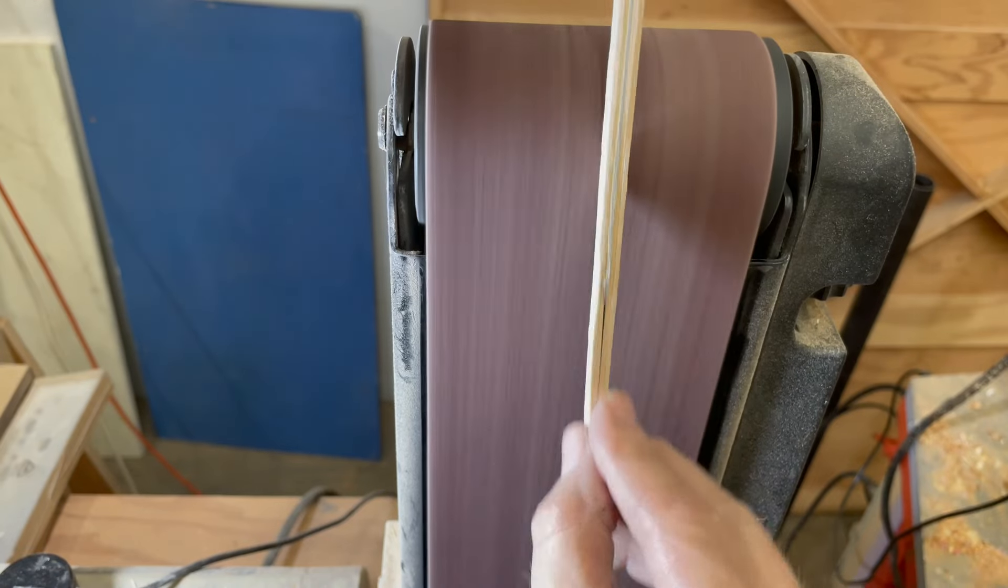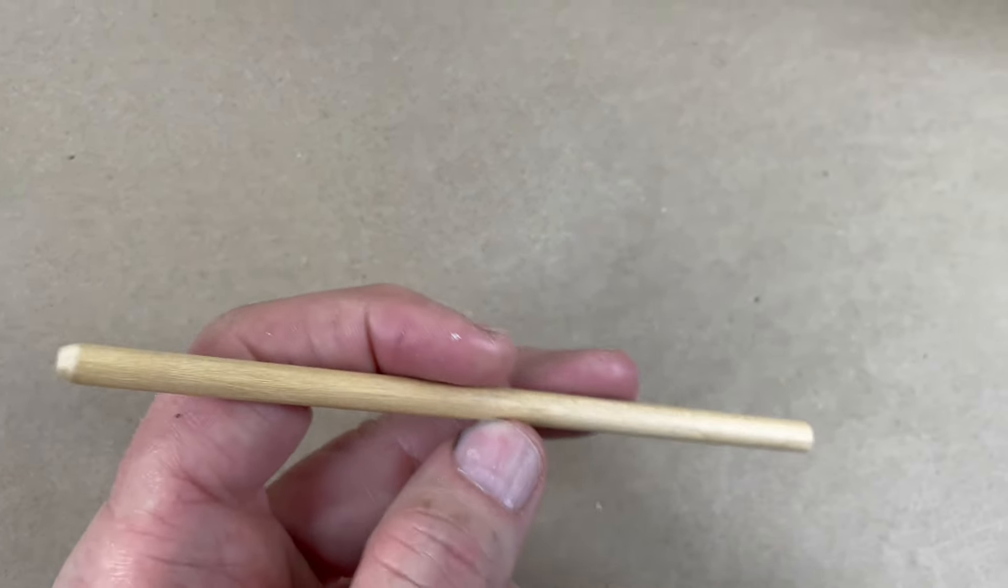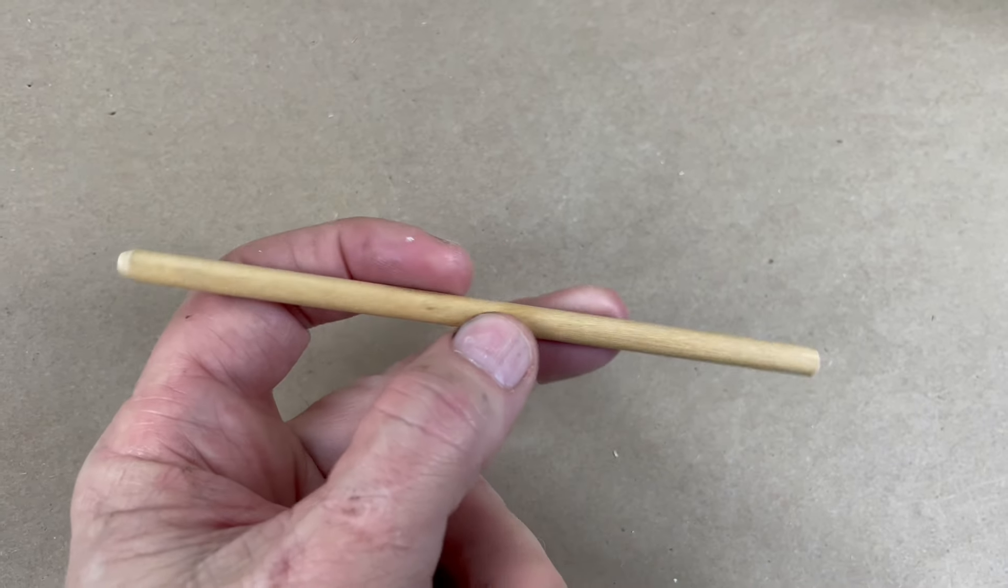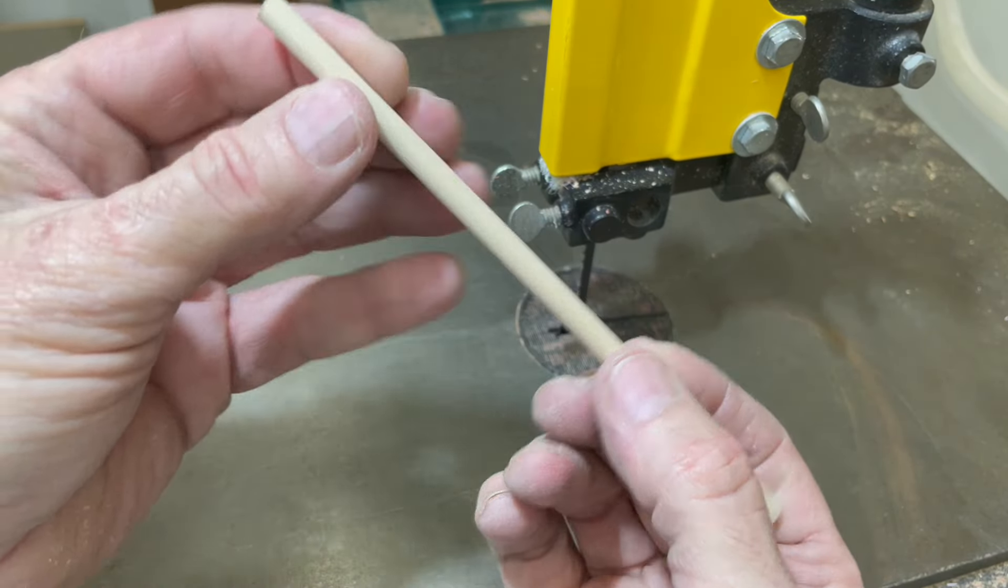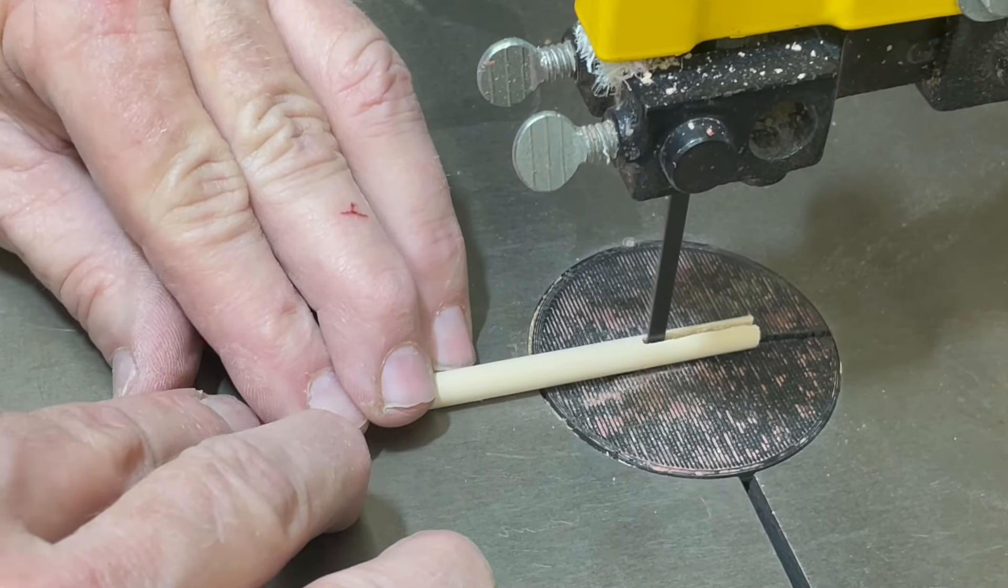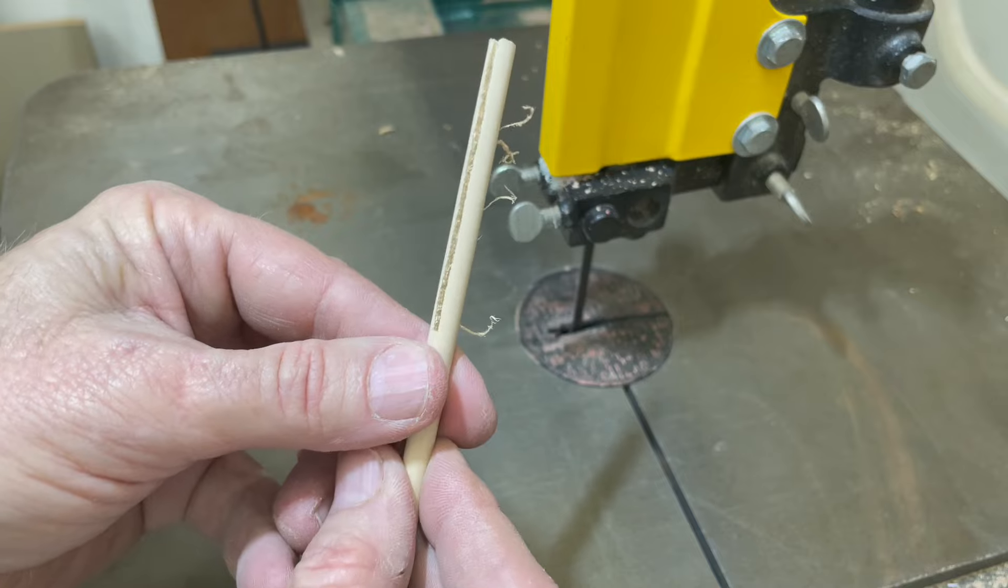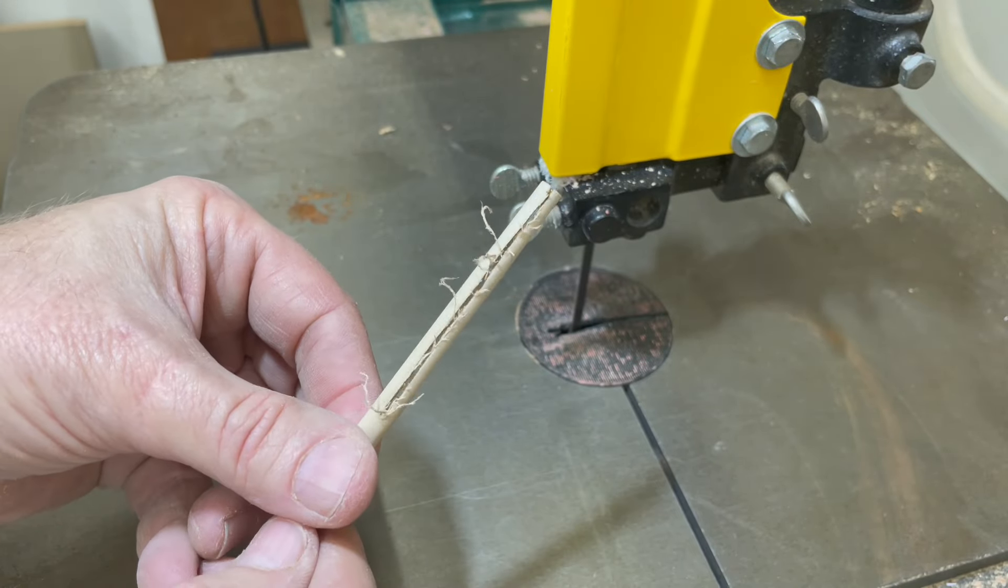If you also happen to have a bandsaw, the quick way to make these pens is to just use quarter inch dowels. I cut them to whatever length is convenient and then cut the kerf on the bandsaw. Notice I'm not using a jig or a fence or anything fancy. I'm just cutting it by hand and that gives me a pretty ragged kerf, which I think actually helps to hold the ink.